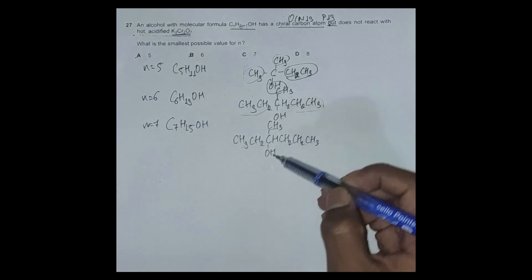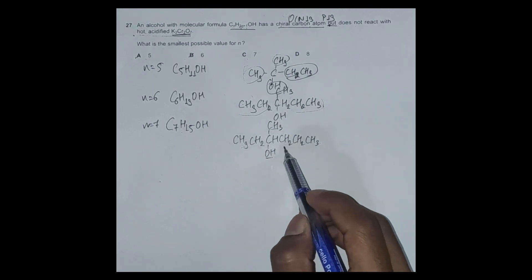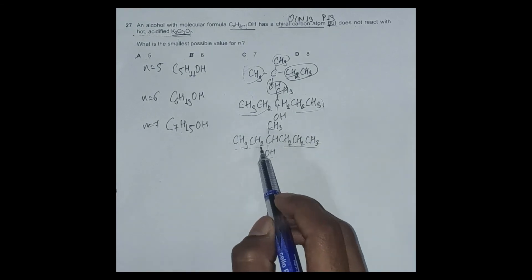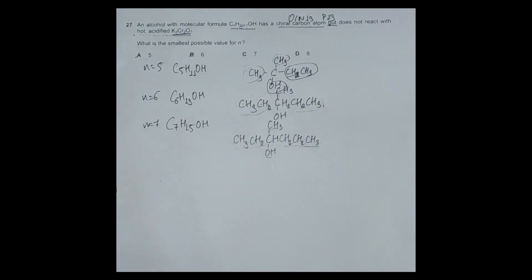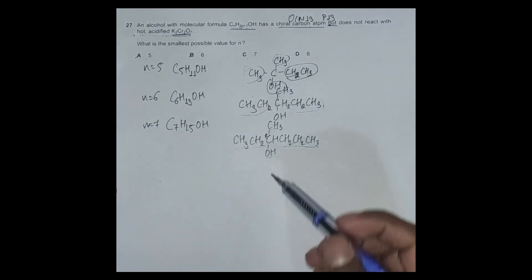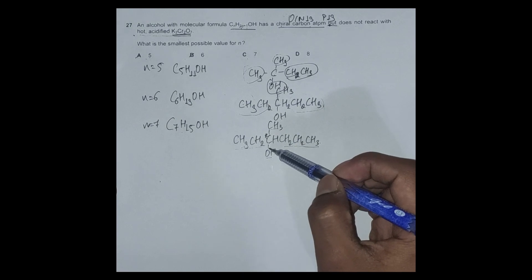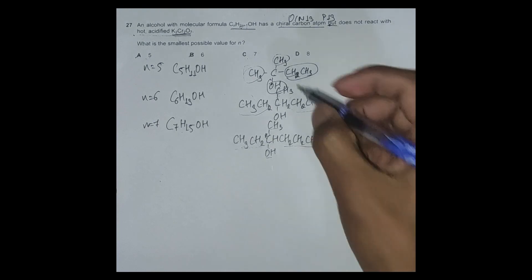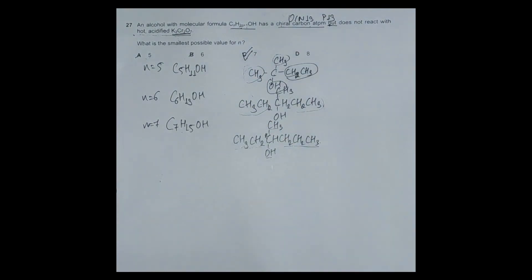Let's see whether this is a chiral carbon or not: CH3 on one side, OH another side, CH2-CH2-CH2-CH3 on the third side, and CH2-CH3 on the fourth side. So four different groups of atoms attached to this carbon atom, so this has a chiral carbon and is in fact a tertiary alcohol, so does not react with hot acidified K2Cr2O7. So option C is our final correct answer.